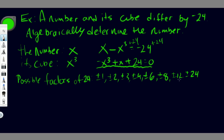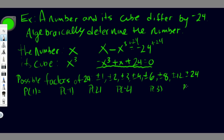There are 16 possible values to check. To do this efficiently, you'd test P(1), P(-1), P(2), P(-2), P(3), P(-3), and so on. That obviously takes a long time. For example, if I put 1 in, I get negative 1 cubed plus 1 plus 24, which equals 24. So that one doesn't work.